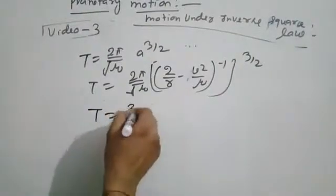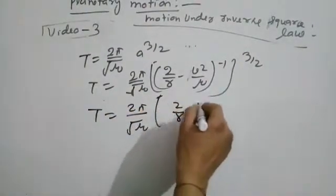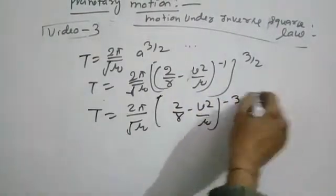Therefore, T = 2π/√μ × (2/r - v²/μ)^(-3/2).